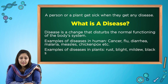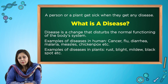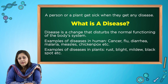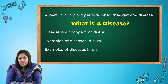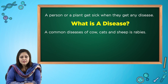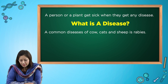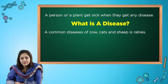Plants get diseases too, like rust, blight, mildew, black spot, etc. And animals also get diseases — cows, cats, and sheep can get rabies, and there are many other diseases.